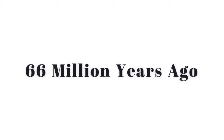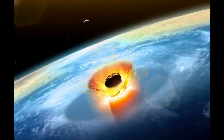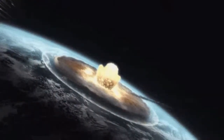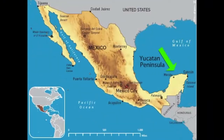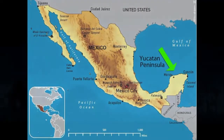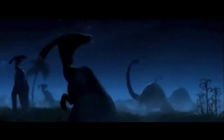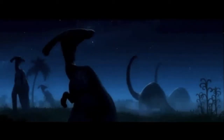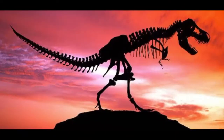66 million years ago, a giant asteroid fell from the sky and smashed onto Earth in what is present-day southeastern Mexico's Yucatan Peninsula. Scientists consider this event as the leading factor in the disappearance of the terrestrial dinosaurs.